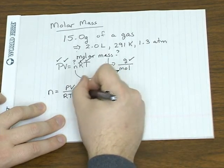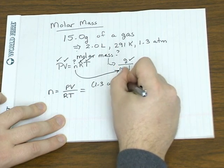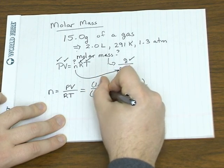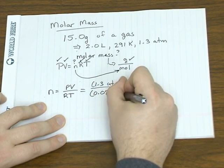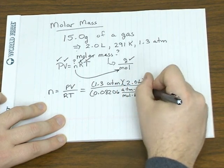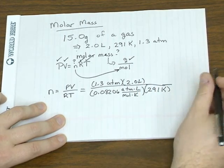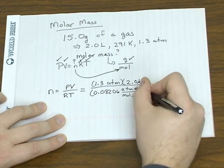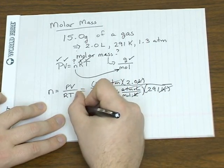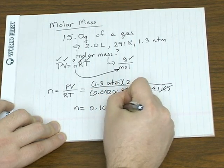So solving for n, plug in everything we have. And again, R's given value is 0.08206 atmosphere liter over mole Kelvin, and temperature is 291. Once again, we see that with these units, everything cancels out except the unit we're looking for. So that gives us 0.109 moles of gas.